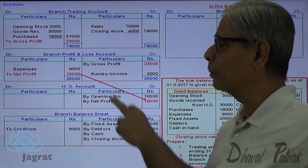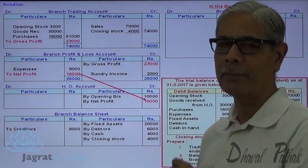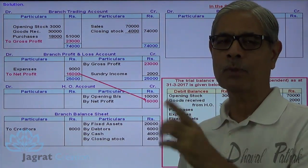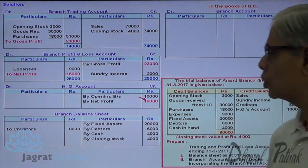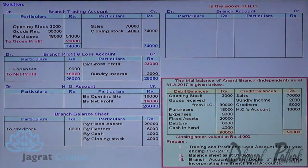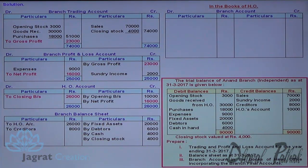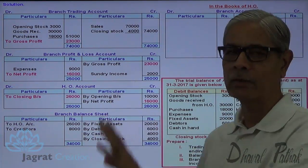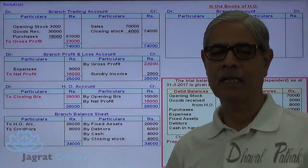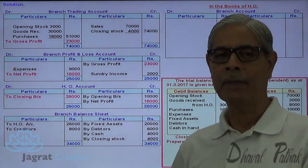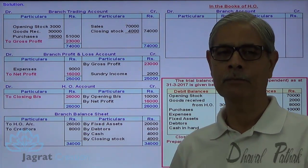The 16,000 profit is credited to HO account because HO is the owner of the profit. HO account is a capital account and profit is added to capital, so this profit is added to HO account. The total balance of HO account becomes 26,000 and that goes to the balance sheet liability side, just like capital. The balance sheet total agrees.